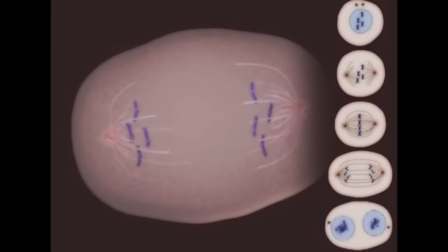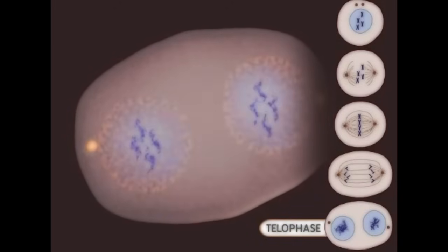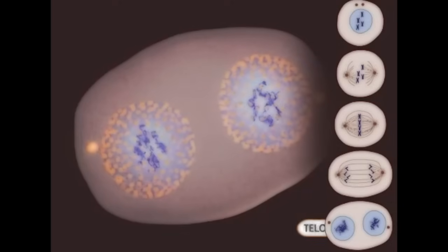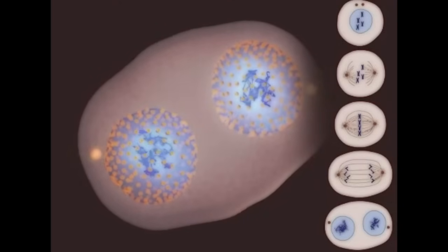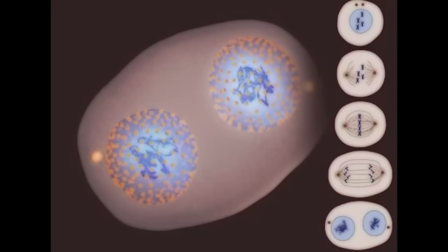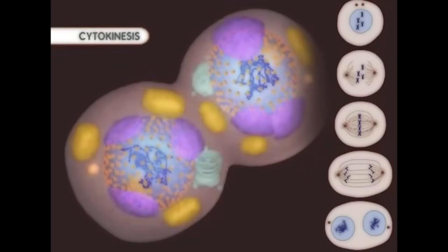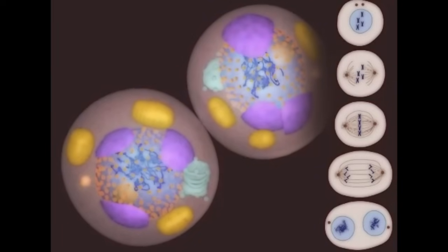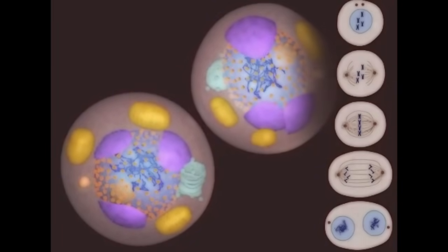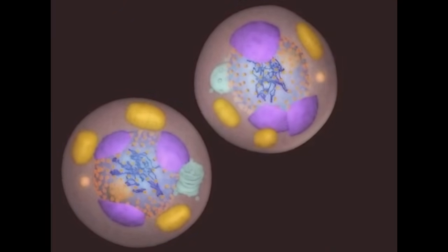The telophase stage is marked by the appearance of new nuclear membranes. This is the end of mitosis. Finally, the splitting of the cell occurs during cytokinesis. The two new cells are now ready to grow and perform their specialized functions.